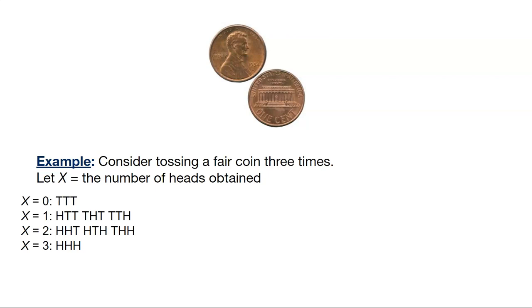So what are the possibilities? Well, X could be zero, you could get all tails. X could be one, one head relative to the three tosses. X could be two, two heads relative to the three tosses. Or X could be three, and you get my favorite professional wrestler, Triple H, all heads.